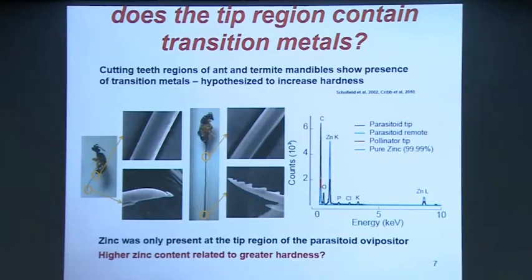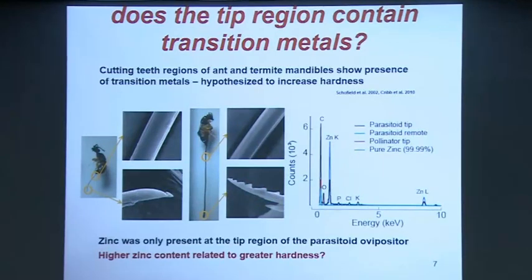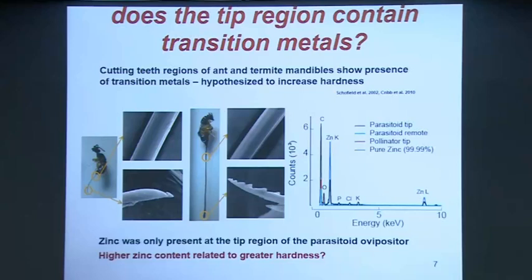What we hypothesized was that for this tool to work — for her to push it inside — it needs to be sharp, and this cutting part should have something making it extremely hard. So we said, let's go and see if it has any transition metals, as was shown in wood-boring insects. What we did was take a scanning electron micrograph with an EDAX detector — energy dispersive X-ray analysis. With this technique, one is able to tell what kind of elements are present. It's a semi-quantitative technique to say how much of each element could be present.